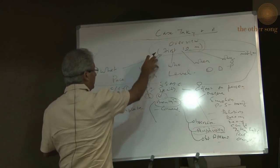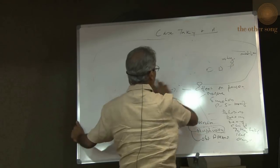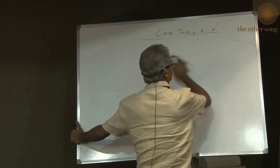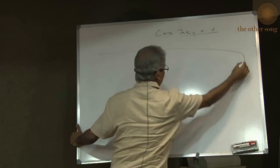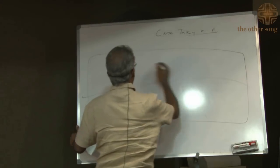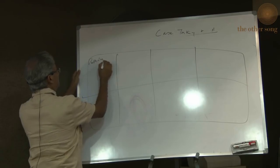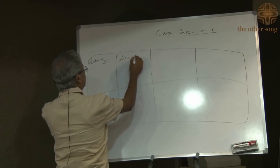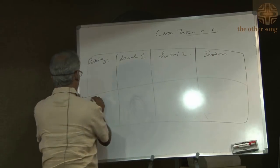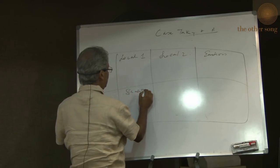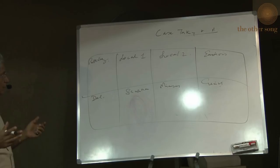Once you have the overview, the exactness, and the completeness, you go to the next step, which is the analysis. Analysis means that you divide it into boxes. Roughly, eight boxes are good: pathology, local symptoms, associated symptoms, emotions and nature, delusions and dreams, sensation, miasm, and genius. You put everything in the right box. This is the analysis.